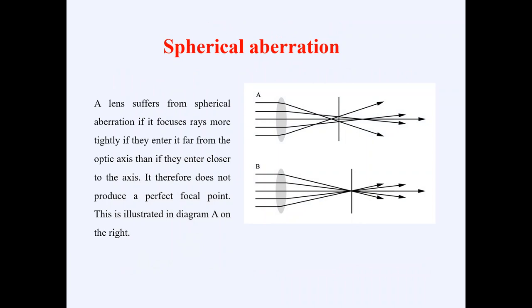We can also have spherical aberration of the lenses in the transmission electron microscope. In spherical aberration, a lens focuses rays more tightly if they enter far from the optical axis than if they enter close to the axis. So their focusing point is different from the optical center — some rays focus in front of the optical center, some even behind it. This type of aberration we call spherical aberration.